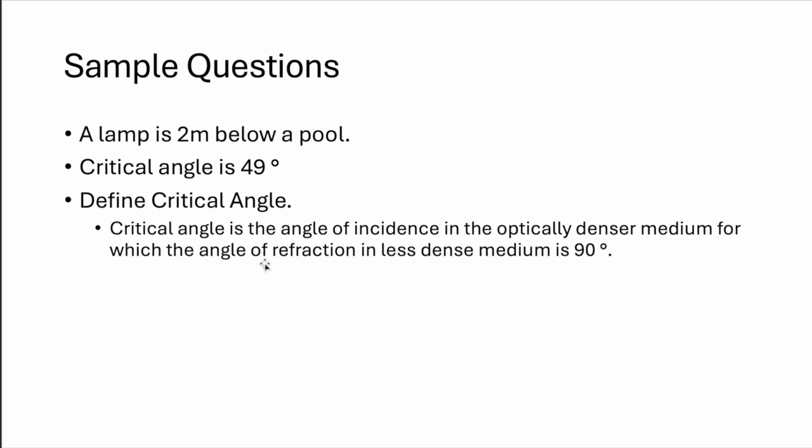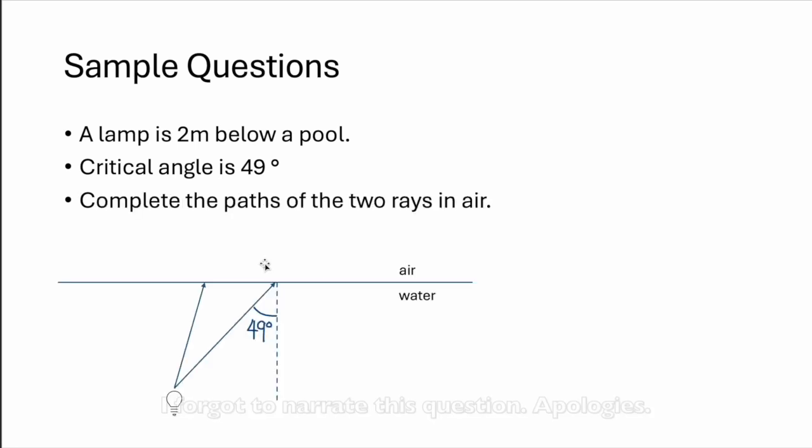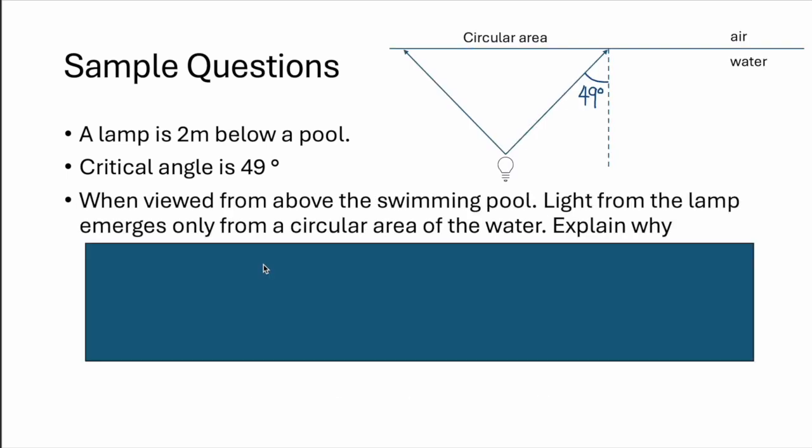So explain what is meant by a critical angle. So this is the basic definition question. When a small lamp is 2 meters below the pool, in a large swimming pool, the critical angle is such. So when viewed from above the swimming pool, light passes only from a circular area. Explain why this happens.